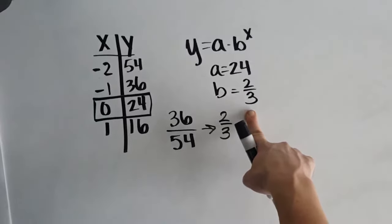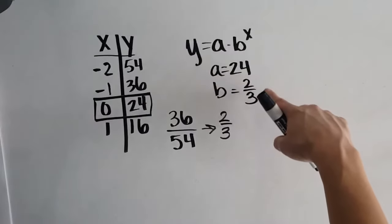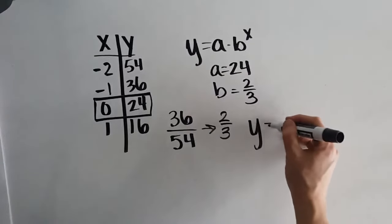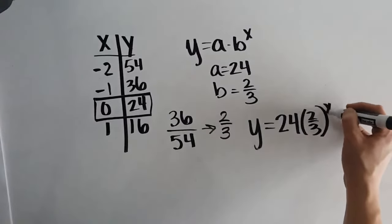So my b value is 2 thirds, which shows me that it's decay, which makes sense, right? Because I'm decreasing at a slower rate as I go. So now that we have our a and we have our b, we can just write our final equation. y equals 24 times 2 thirds to the power of x.